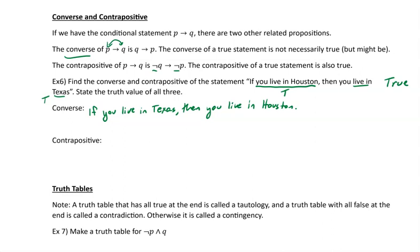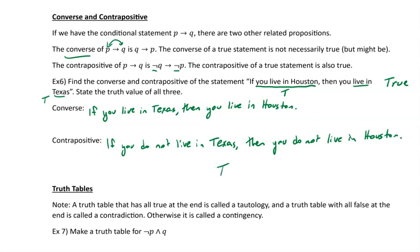For the contrapositive, we swap and negate both: 'if you do not live in Texas, then you do not live in Houston.' This is true — if you don't live in Texas, you can't live in Houston. The contrapositive has the same exact meaning as our original statement, which was also true. So original: true; converse: false; contrapositive: true.